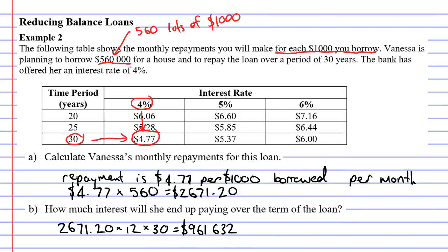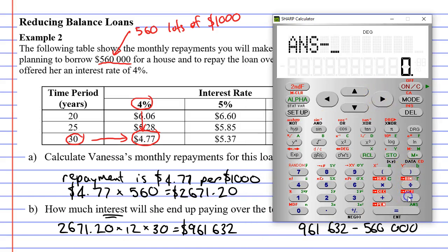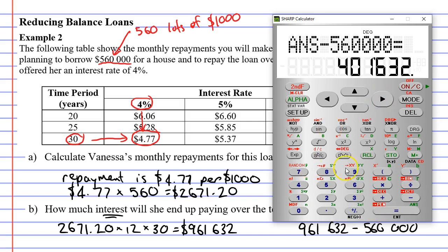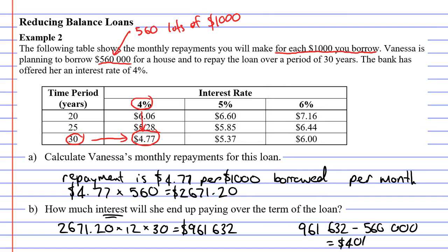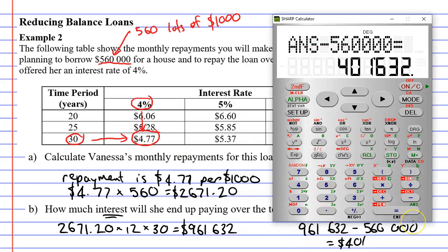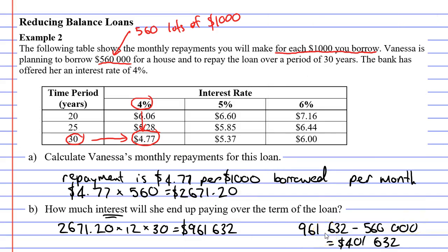Almost $1,000,000 — this is a very large amount. They're asking us to calculate the interest, which is the extra money the bank made from her. We take the total amount paid to the bank, $961,632, and subtract the amount she originally borrowed, $560,000, which comes to $401,632. This is the interest she ended up paying, or the amount the bank profited.